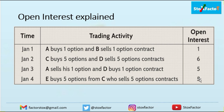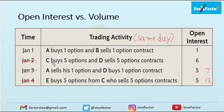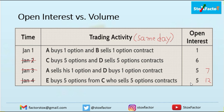Now let's understand the difference between open interest and volume, using the same example. On January 1, volume is one. By January 2 after A sells to D, the volume becomes seven, but the open interest is five. By January 4, when E buys five from C, the open interest remains five, but the volume is now twelve (seven plus five). Volume and open interest are calculated differently.